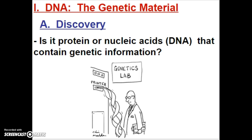In around the 1940s, there was a debate in the scientific community as to what portions of the cell contained genetic information — what portions contained the directions for making and running an organism. Was it protein or was it DNA? The general school of thought in the 1940s was that proteins were in charge of genetic information. However, several experiments were performed to finally explain that it was DNA that contains the genetic information in cells.